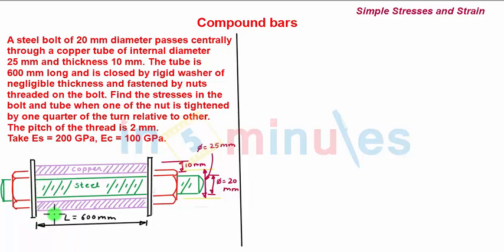The length of the composite section is 600 mm. We need to find the stresses in the steel bolt and copper tube when one nut is tightened by one quarter turn. So we find σs and σc when the nut is turned by 1/4 turn.